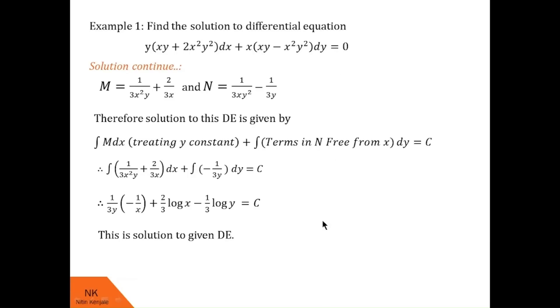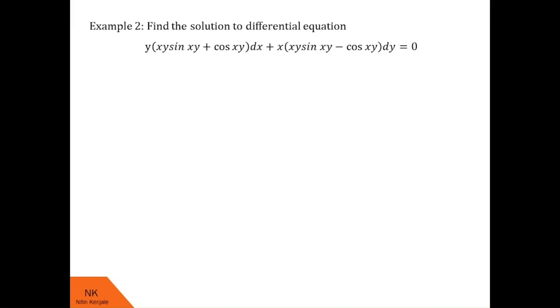Now let me show you one more example of the similar type. The differential equation is: y(xy sin xy + cos xy) dx + x(xy sin xy − cos xy) dy = 0. This differential equation looks like y·f₁(x,y) dx + x·f₂(x,y) dy = 0. We will first check whether this is an exact differential equation or not.